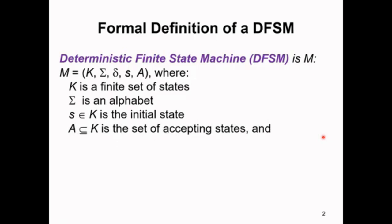S belongs to K is an initial state or start state. A is a subset of K which is a set of accepting states, and delta is a transition function from a state, an input symbol to the next state.